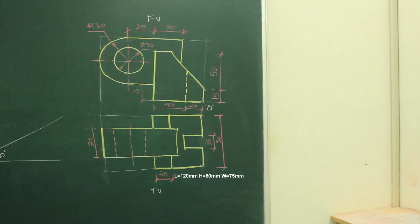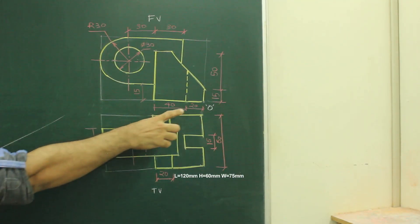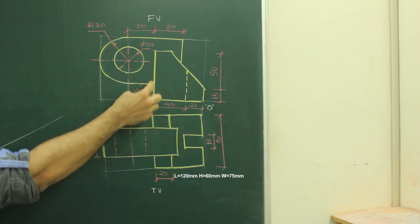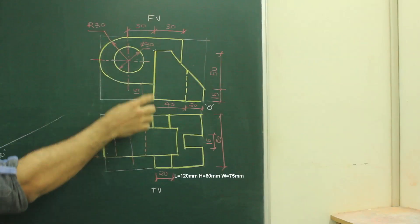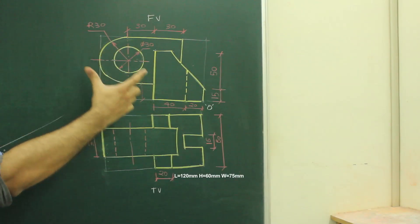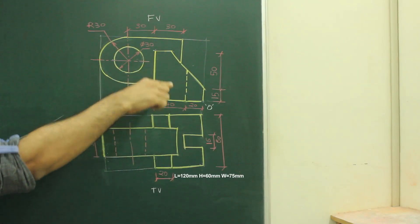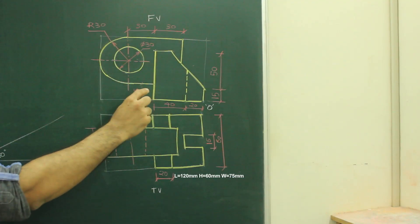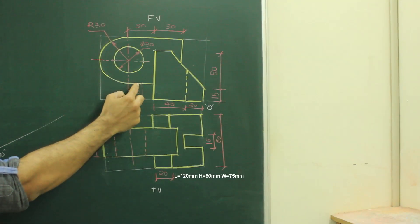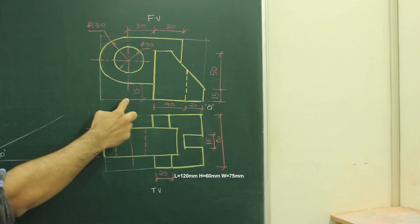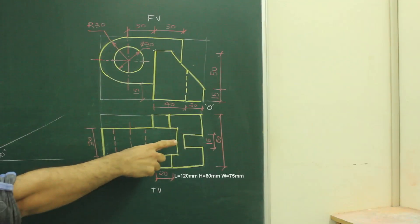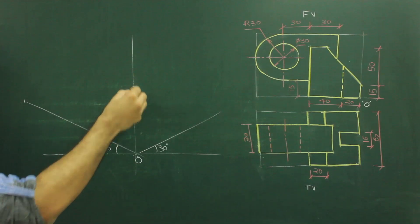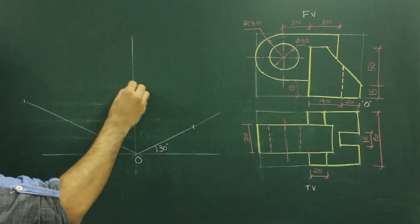The total length is 120: 20 plus 40 on one side, coinciding with 30 plus 30. Total height is 15 plus 50 = 65, but since we don't have top height, we go 15 plus 60, so height is 75. Width is 60. So first we will draw with length 120, height 75, and width 60.